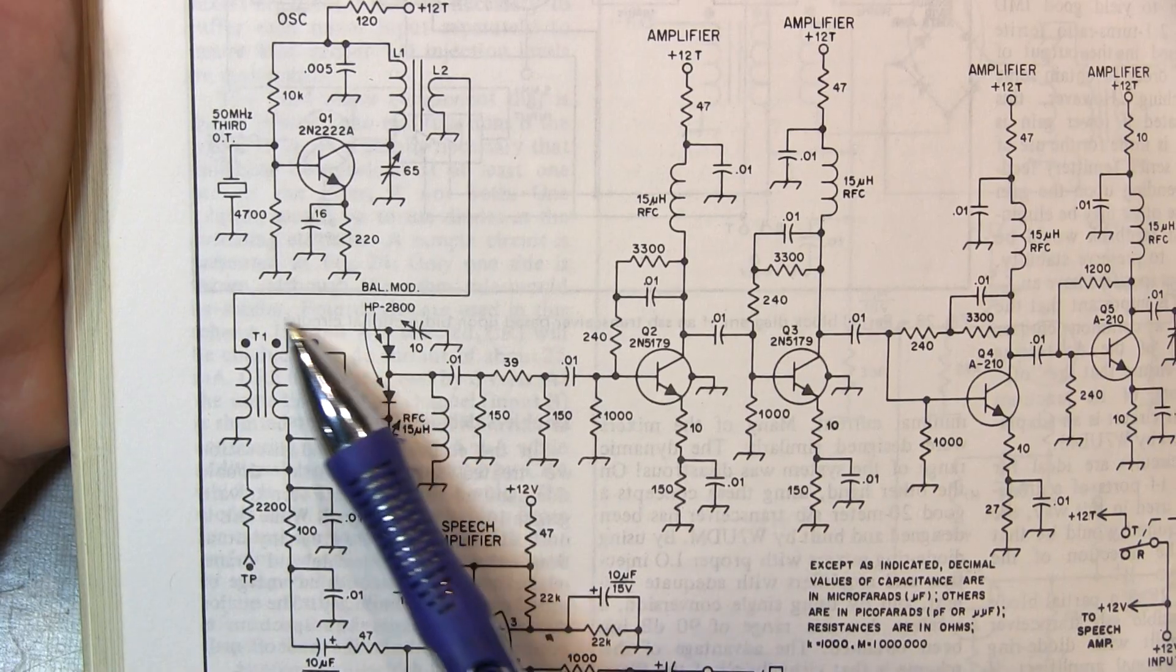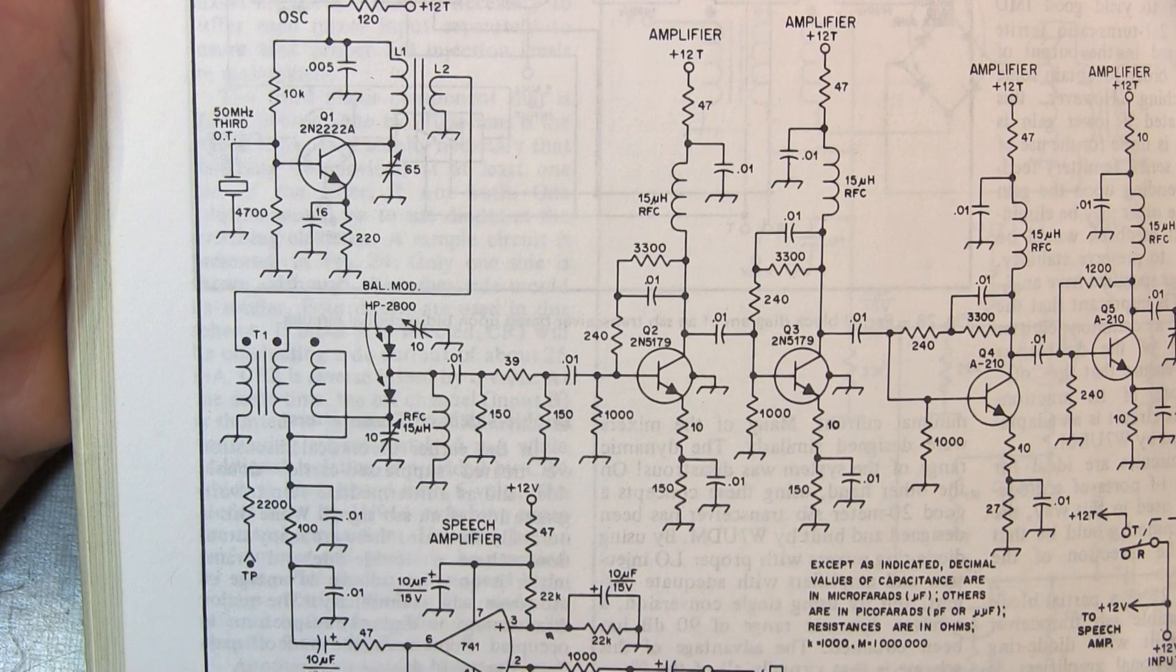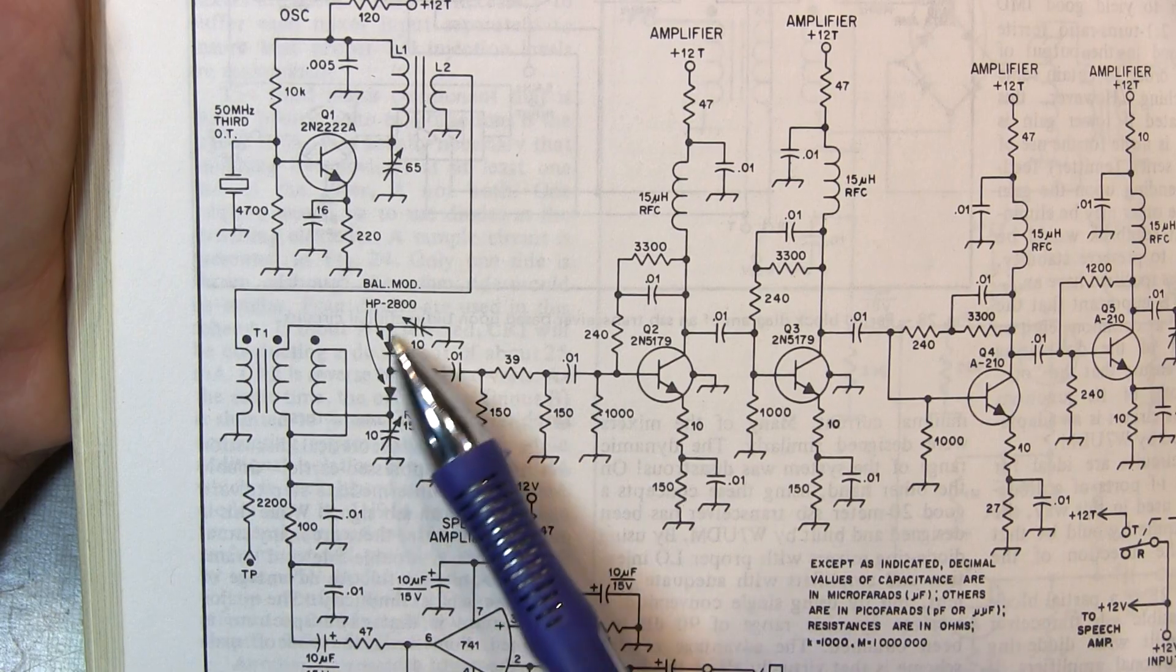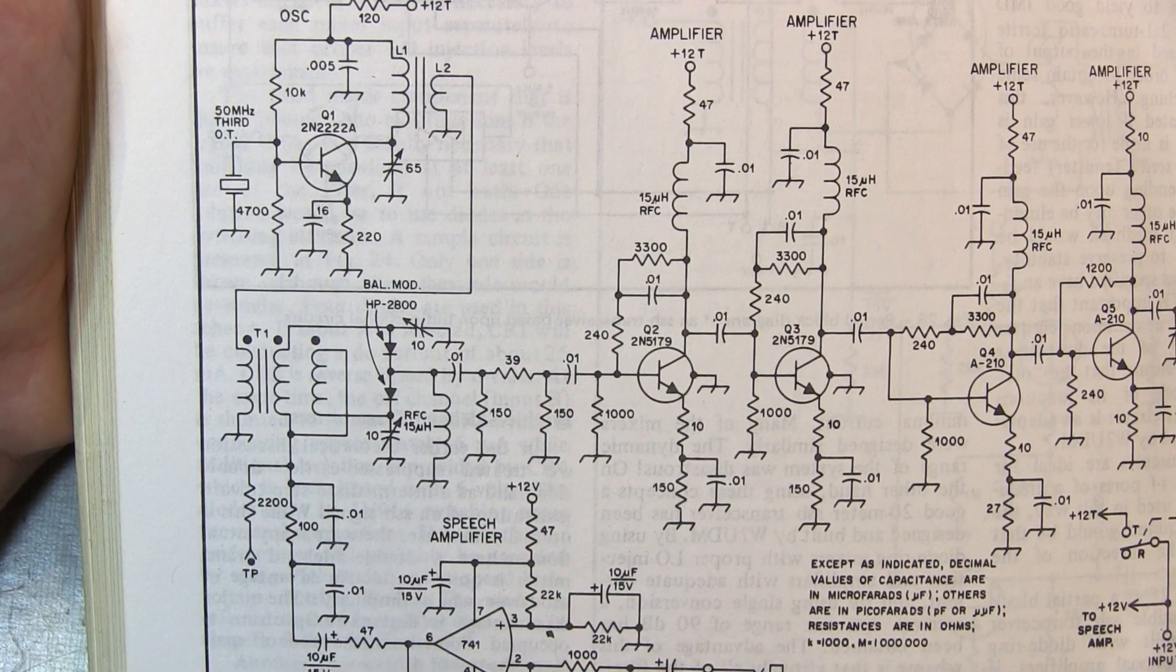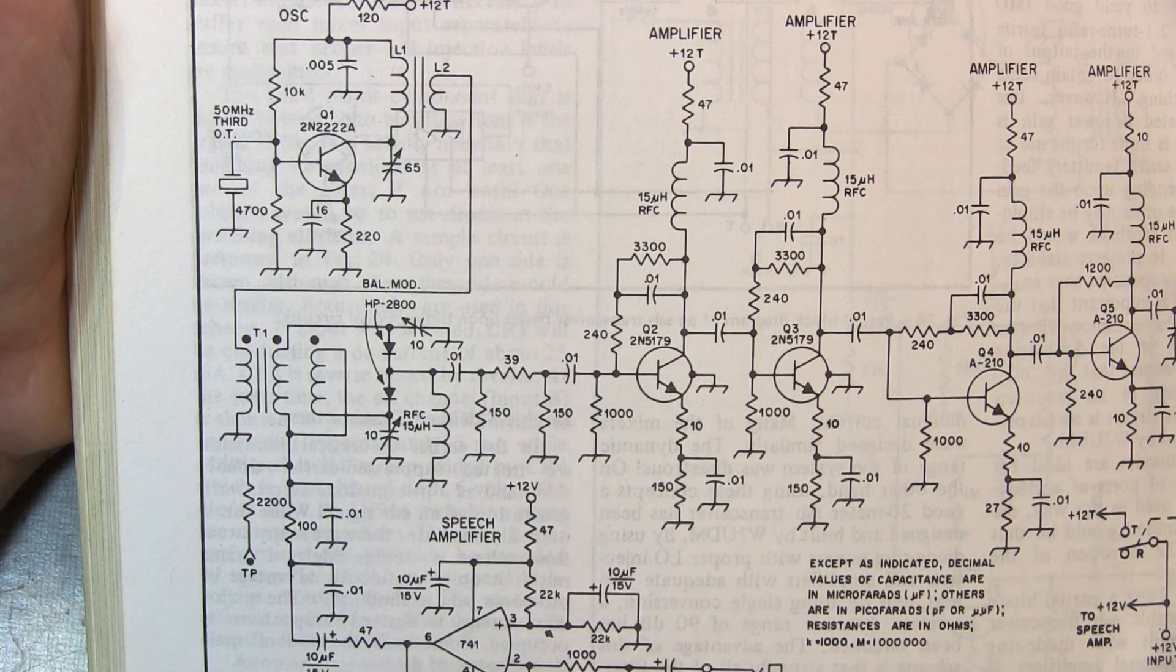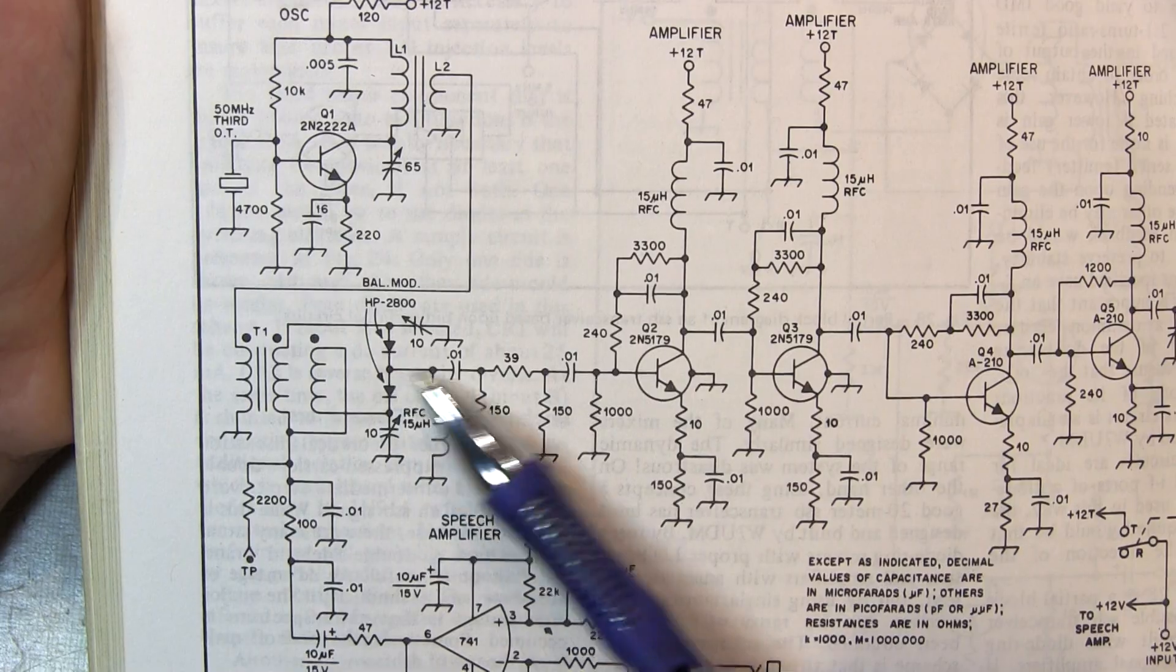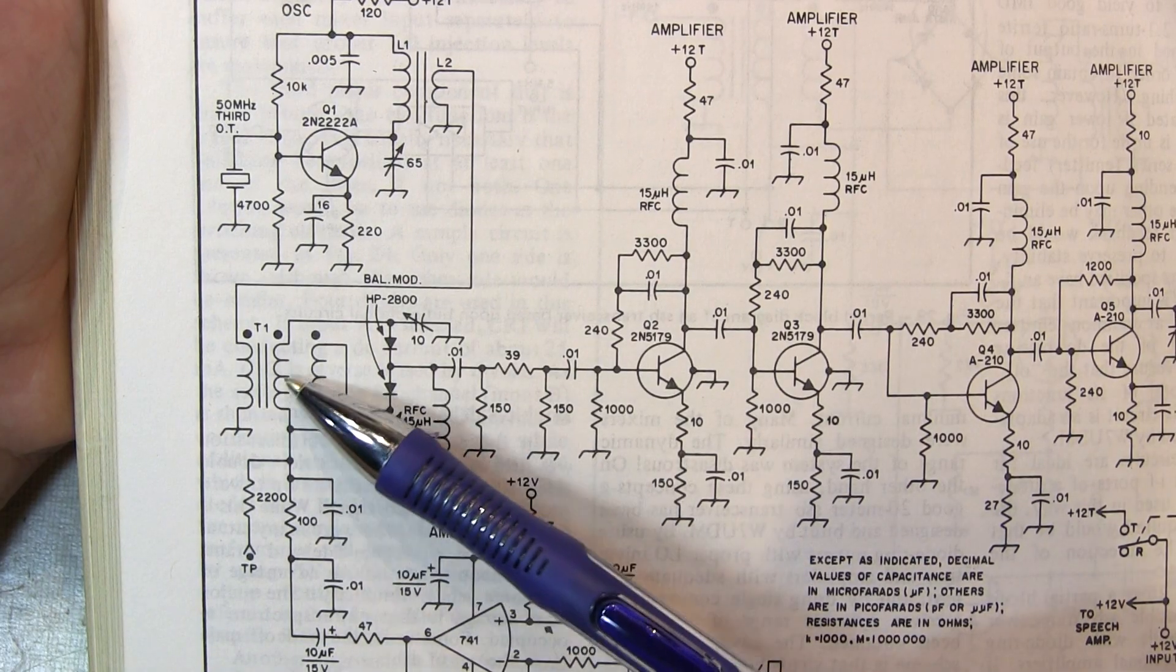But if we look down here, we see this tri-filar wound transformer and the phasing dots are there. This transformer along with these diodes and capacitors form a balanced modulator to basically take the RF carrier from the oscillator and the audio signal from the microphone amplifier here and create a double sideband modulated signal. In this particular case, the polarity of the windings does matter for proper operation of that balanced modulator.